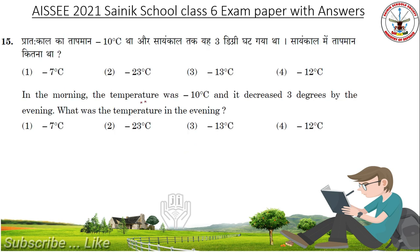In the morning, the temperature was minus 10 degrees centigrade and it decreased 3 degrees by the evening. What was the temperature in the evening? Answer is minus 13 degrees Celsius.